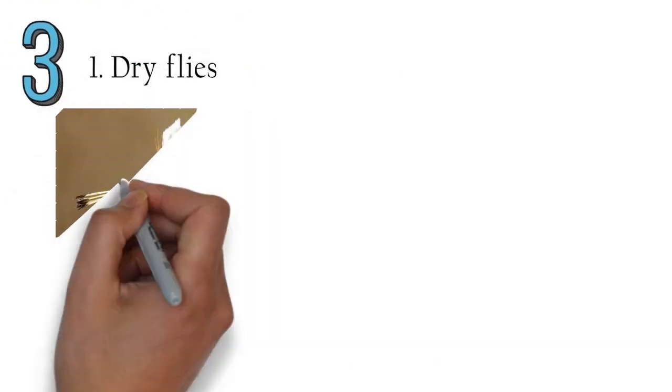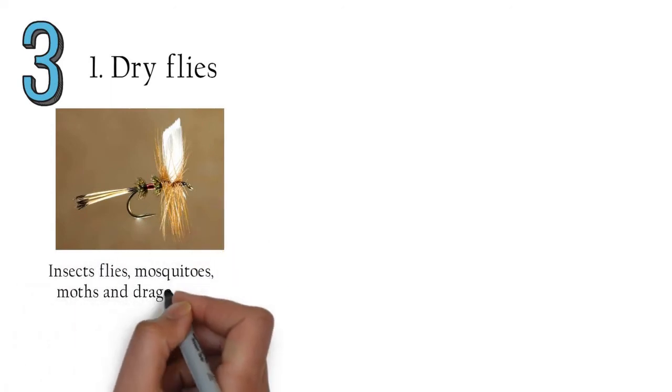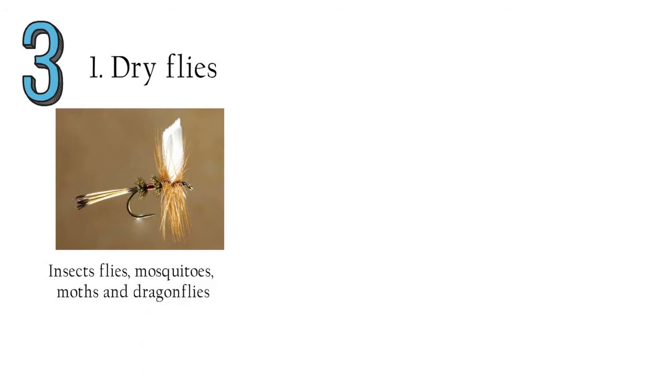Dry flies: most fishermen prefer to use this type of fly. They are made to look like flying bugs that land and float on the water—insects, flies, mosquitoes, moths, and dragonflies. Fish get attracted to dry flies when they land on the water and make ripples.